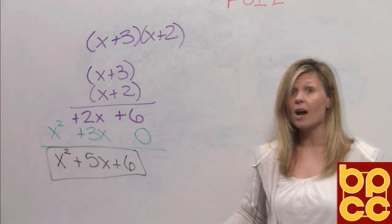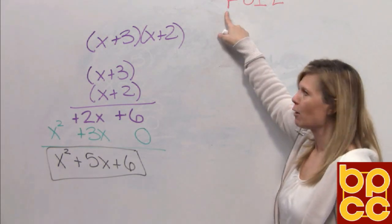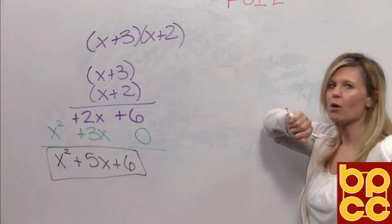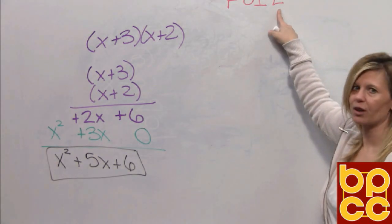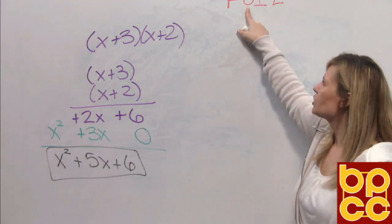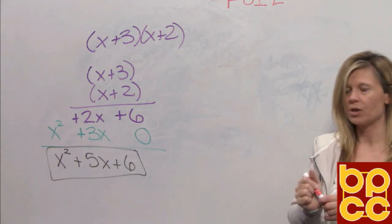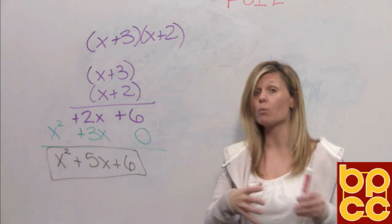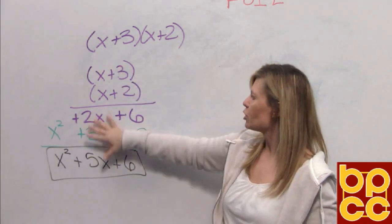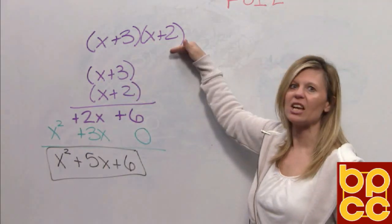You've already heard me say with conjugates, F stands for first. And you've heard me with conjugates, L stands for last. O stands for the outer terms and I stands for the inner terms. So if you know which terms are which, you don't have to do this work. You can multiply this in your head.